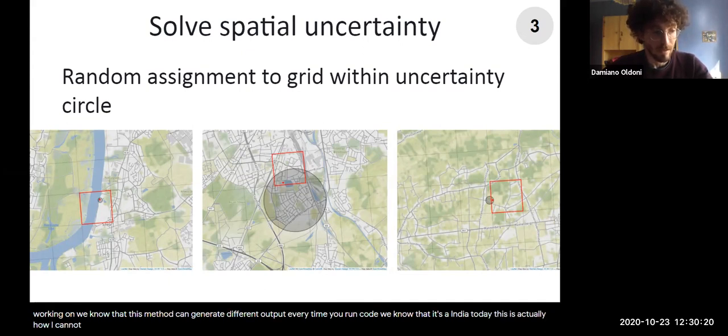We know that this method can generate different output every time you run the code. We know that. It's a big... But this is actually how uncertainty is. We cannot, as I said, we don't solve actually uncertainty. We handle it the same.